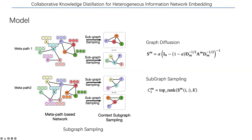Given the heterogeneous information network and metapaths, we first project the HIN into several metapath-based homogeneous networks with a single type of node. To overcome the sparsity problem, we utilize graph diffusion techniques that model the pairwise relationship between each pair of nodes. Here, we use the personalized PageRank method described in the equation — though other diffusion metrics such as graph distance can also be used. To improve training efficiency, we conduct subgraph sampling on each metapath-based network, extracting subgraphs of different granularity using the top-K instances.